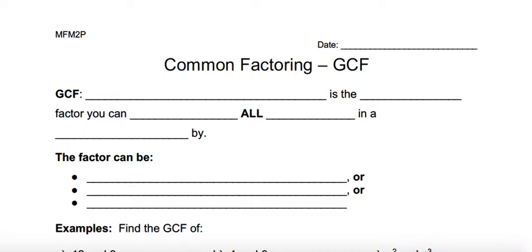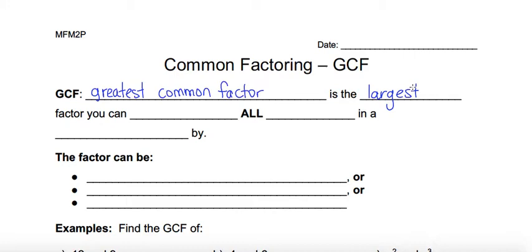Factoring, or GCF. GCF is an acronym for the greatest common factor. The greatest common factor is the largest factor that you can divide evenly into every single term within a polynomial. Right now that seems like a confusing definition, but you're going to see as we go through some examples what that actually looks like.